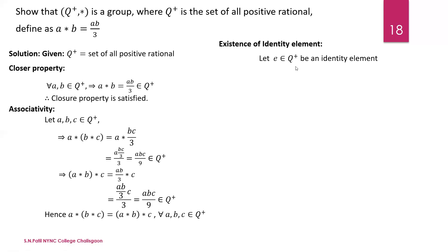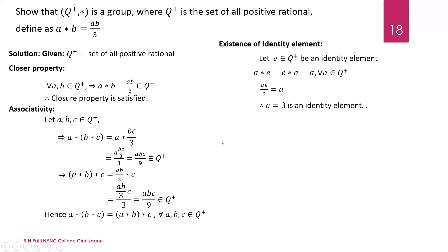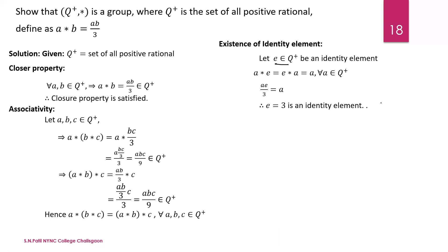Next is the existence of an identity element. Let e be the identity in Q+. By definition, a star e equals e star a equals a for every element in Q+. Now a star e equals ae/3 equals a, so multiplying both sides by 3 and cancelling a, we get e equals 3. Since 3 belongs to Q+, the identity element exists.